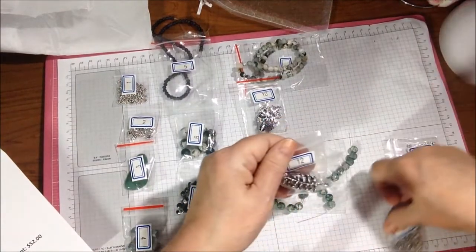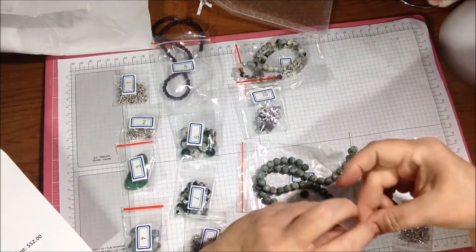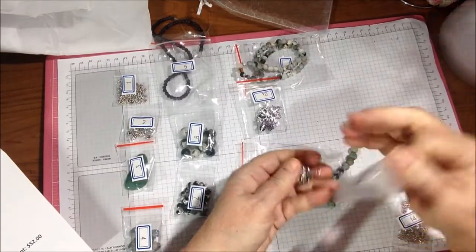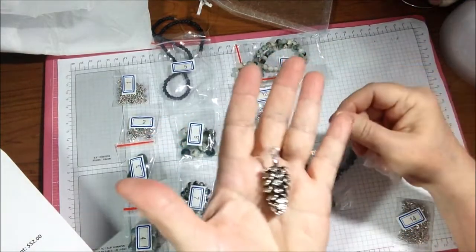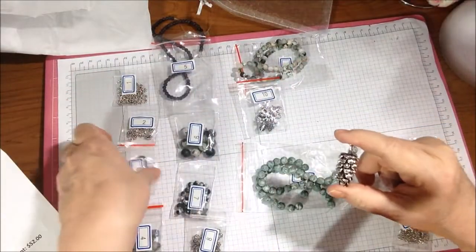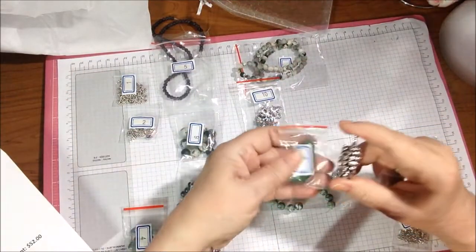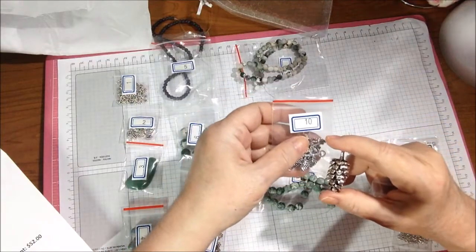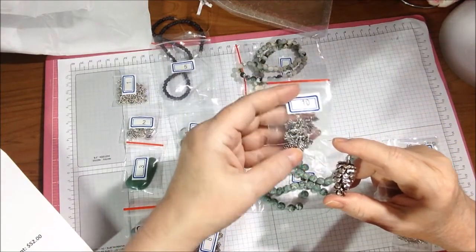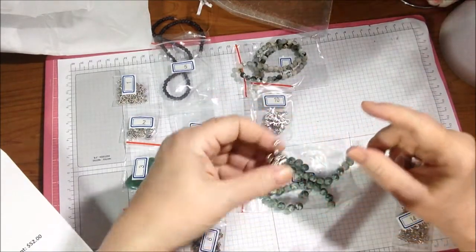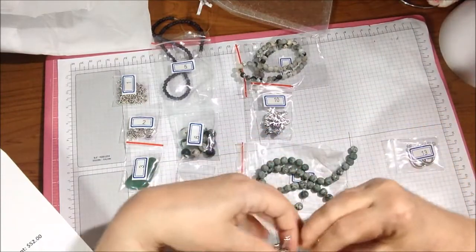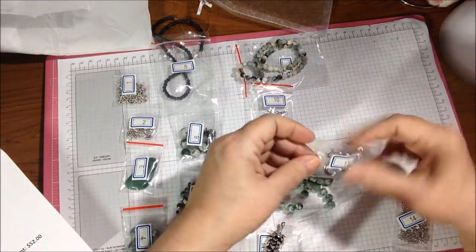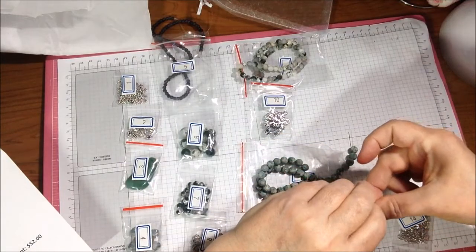And then number 12 is a 42 millimeter pine cone pendant, so that is a big pendant but there you go. So we have a variety of choices for pendant - we have the green serpentine, we have these 33 by 26 pine tree branch pendants, we have the big pine cone here.